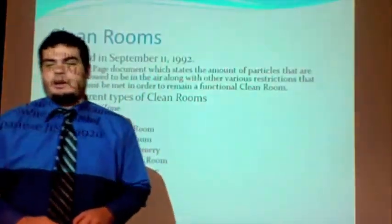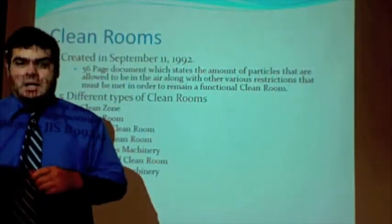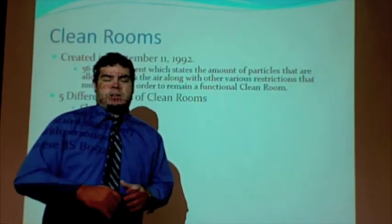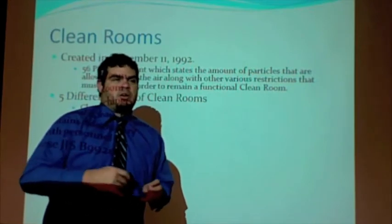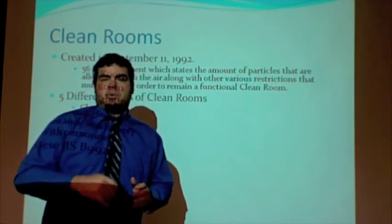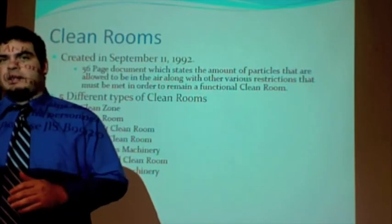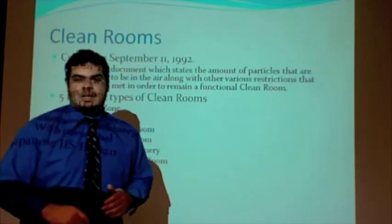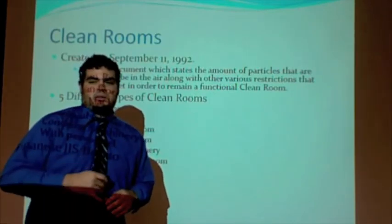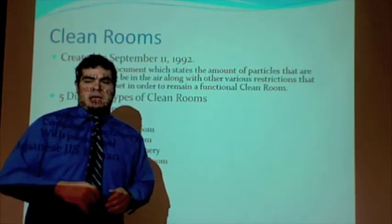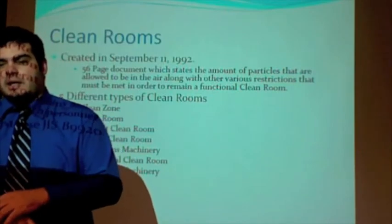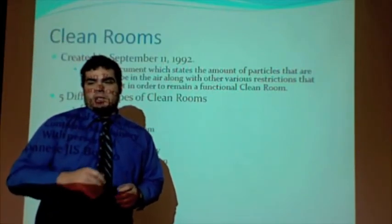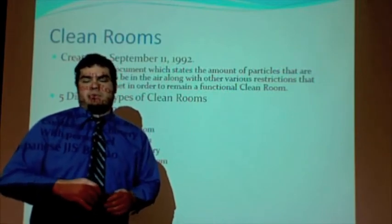First we're going to start off talking about the actual clean rooms themselves and the standards they contain. There is a 56-page document which clarifies exactly what a clean room consists of and how many particles should be in a cubic millimeter in the air — that's how each room is classified. We have five different types: the clean zone, the clean room, the as-built clean room, the at-rest clean room which contains machinery, and the operational clean room which contains machinery and personnel. We're going to be dealing with the at-rest clean room for our unit.